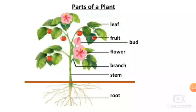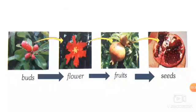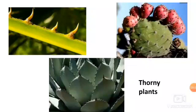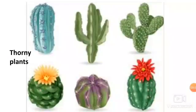Most of the plants have green leaves. Now, children, this is something very important to remember: a bud opens to form a flower, most flowers produce fruits, and fruits have seeds inside them. And you already know that from the seed grows a new plant — isn't that amazing? And do you know, children, some plants have thorns. Such plants are called thorny plants.